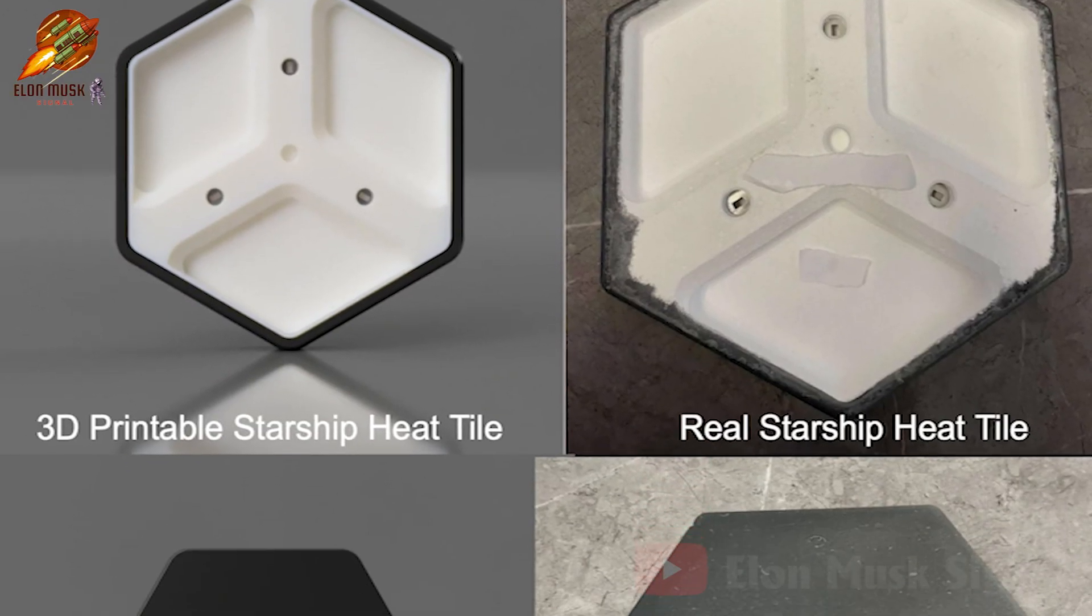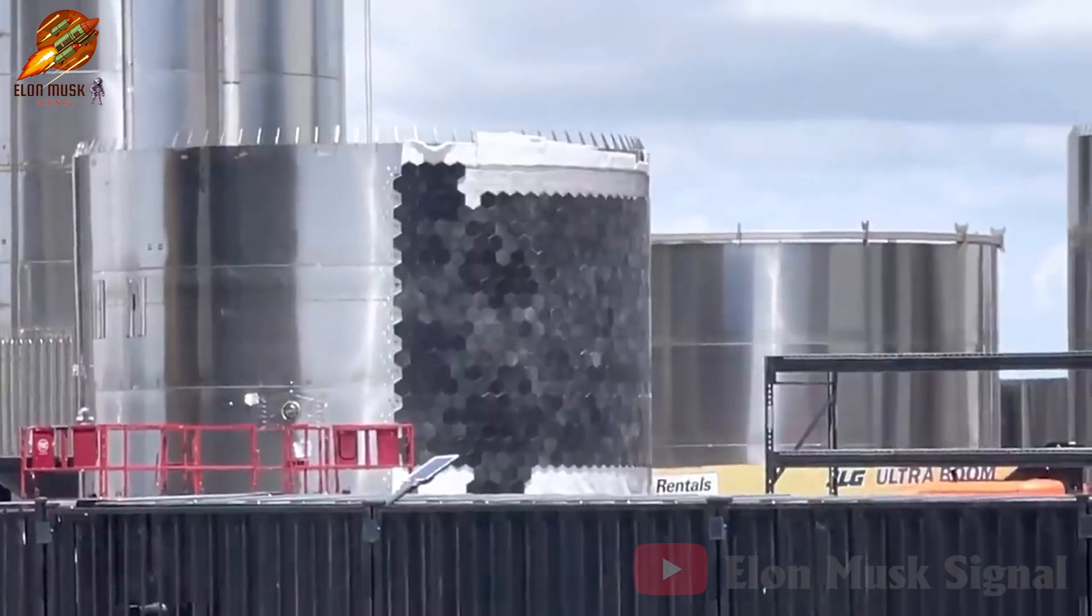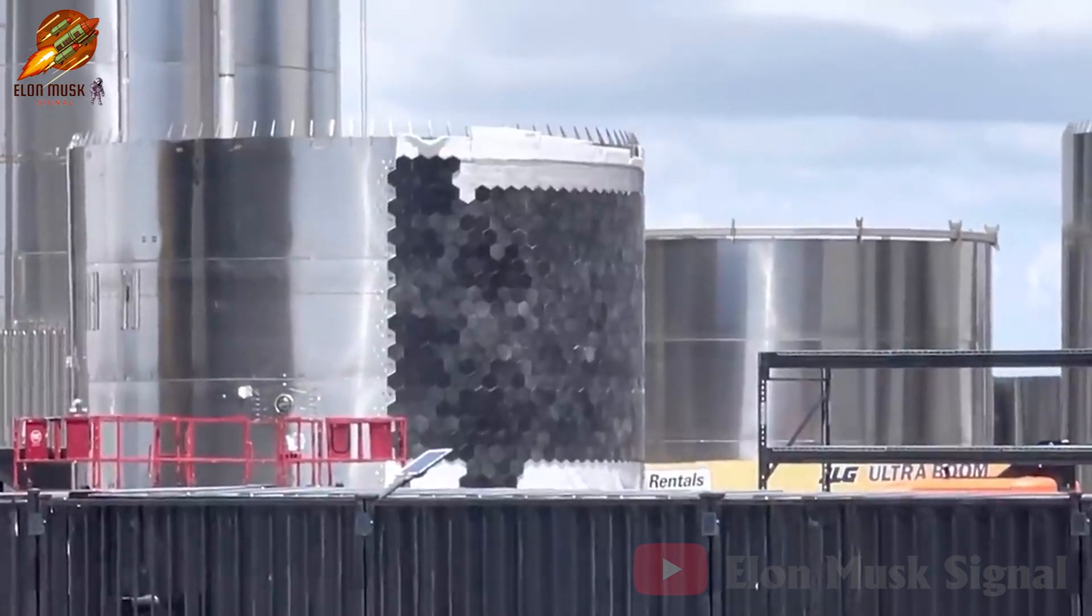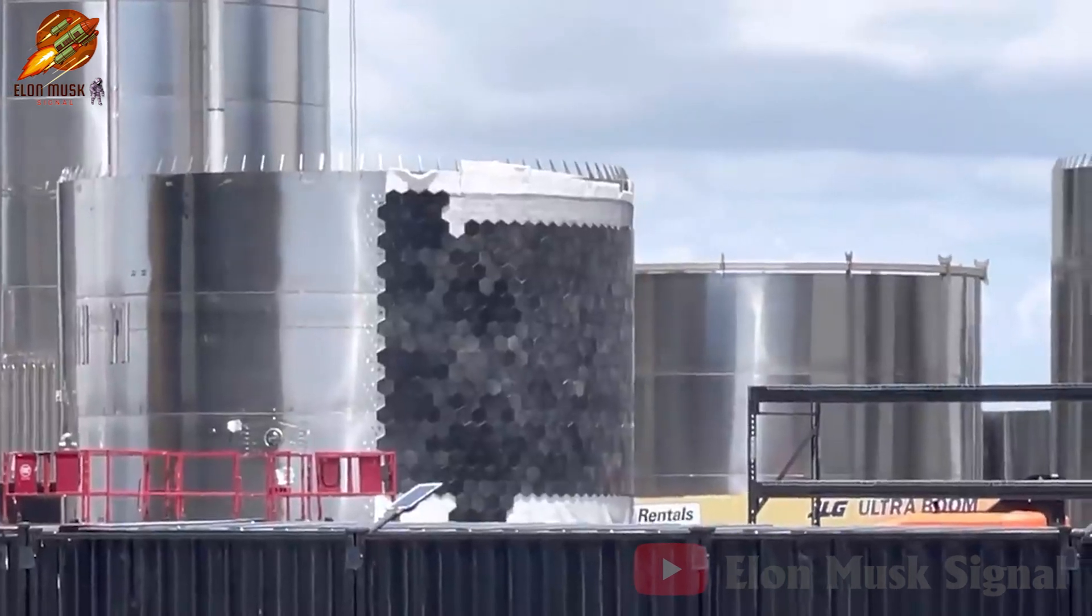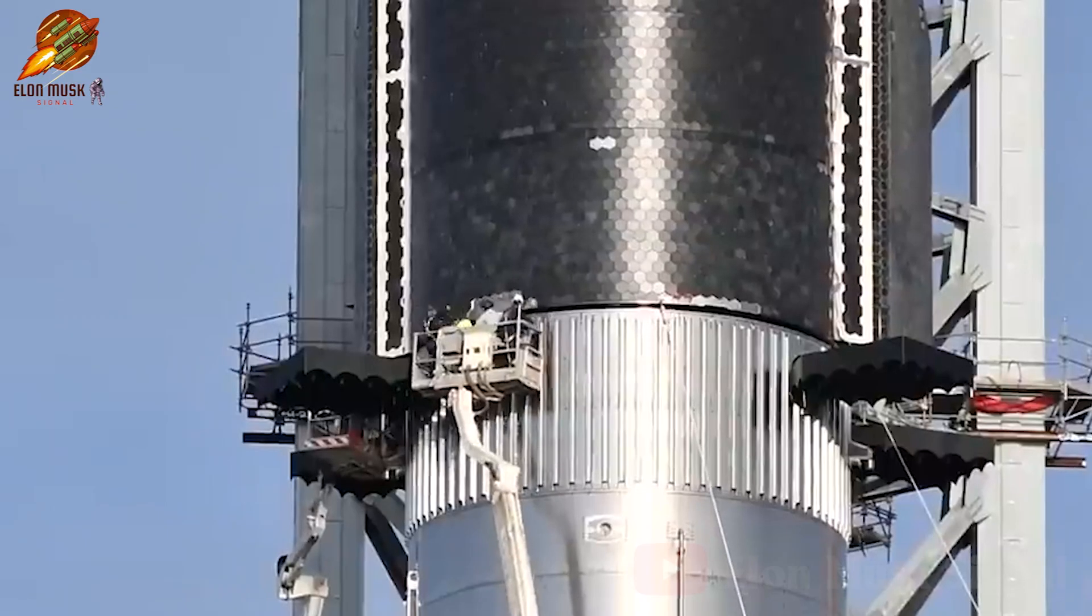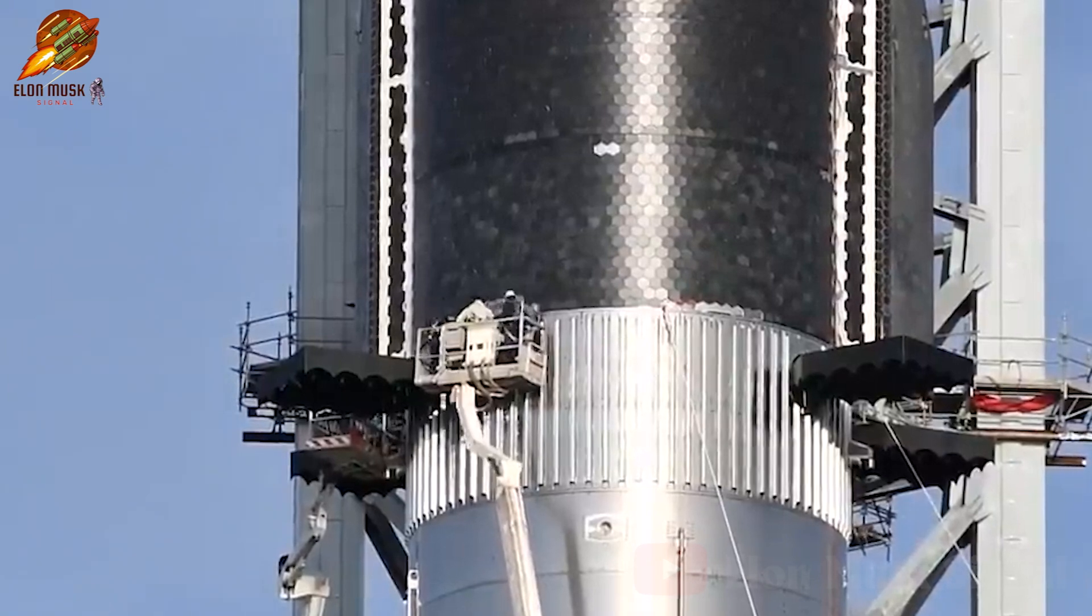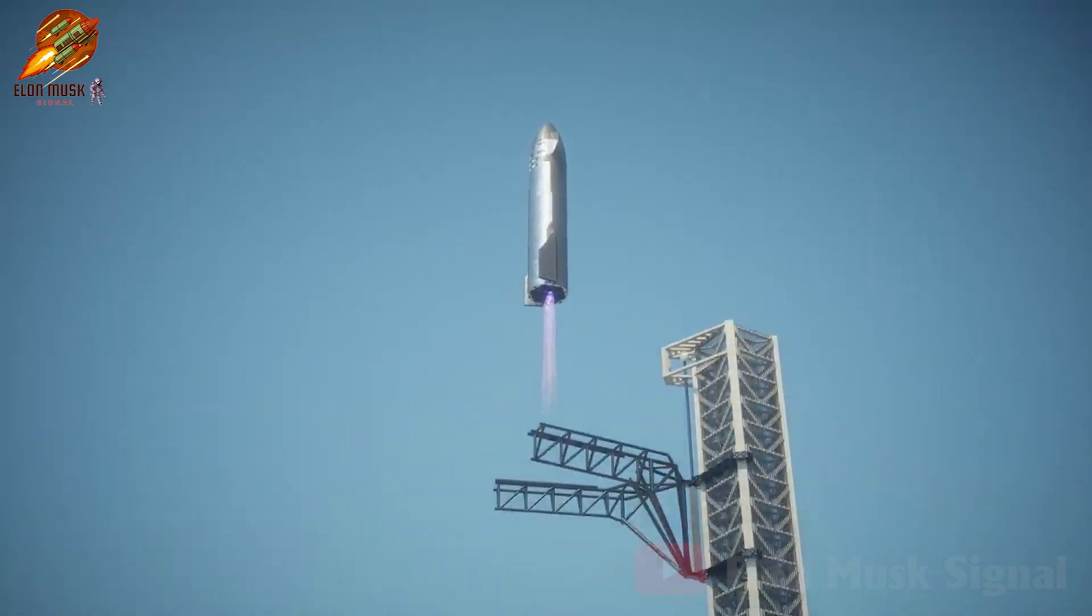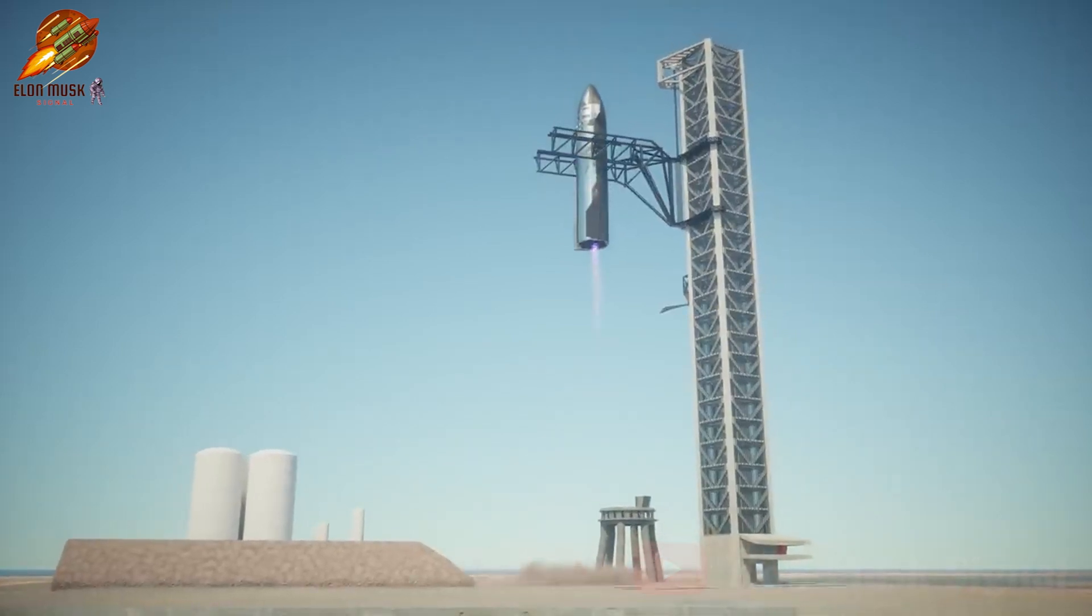Initially, Musk envisioned an active cooling system for the heat shield, featuring a dual layer structure with small holes to circulate coolant. However, the current solution using traditional heat-resistant materials still ensures the spacecraft's protection during re-entry. While not entirely reusable, optimizing the maintenance and repair process of the heat shield is a significant step towards SpaceX's dream of reusable space vehicles becoming a reality.